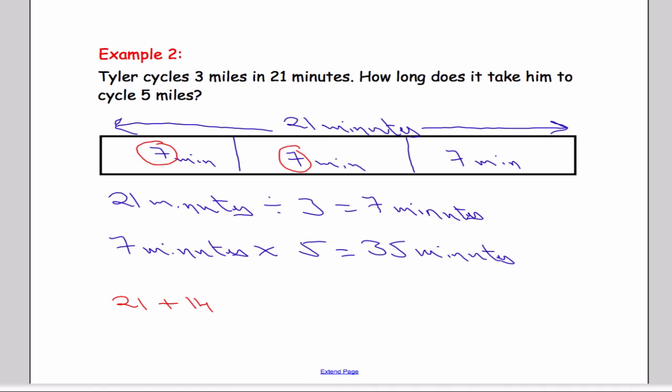Remember, that represents 3 miles, and this is 2 miles. If we add them together, we should get the 5 miles. 21 and 14 is 35 minutes, and 3 miles and 2 miles is the same as 5 miles.